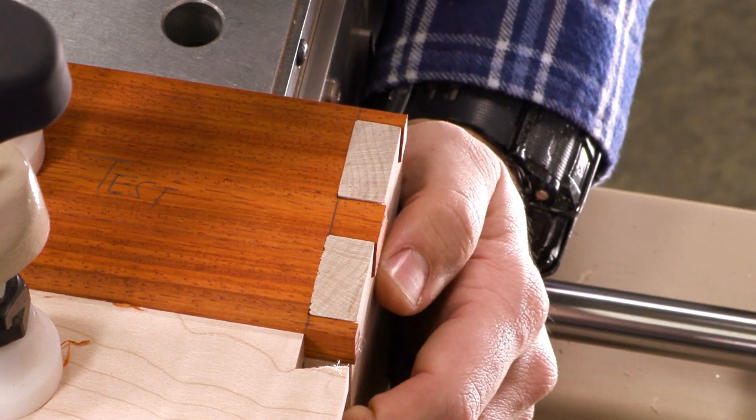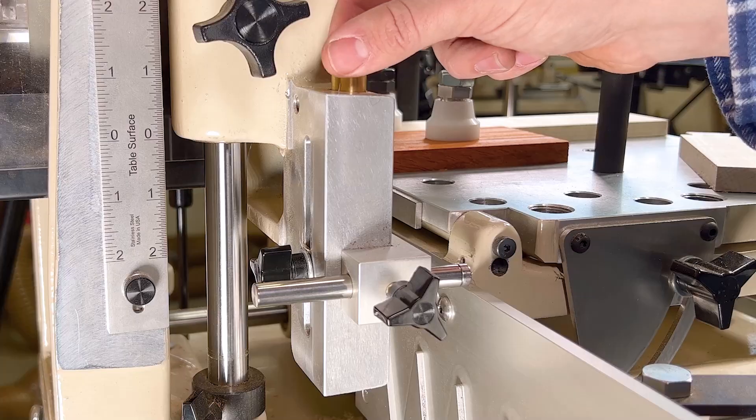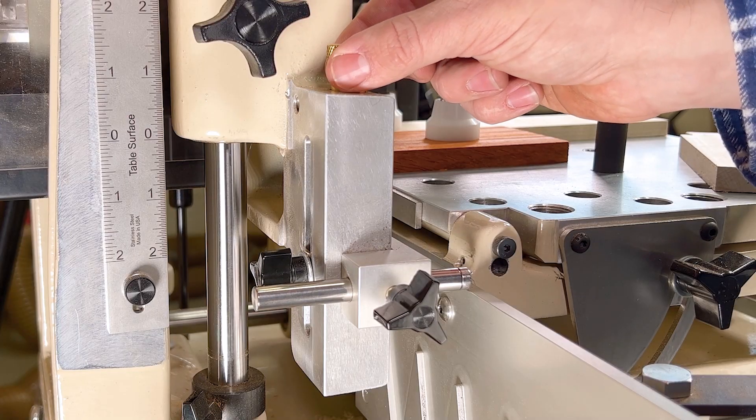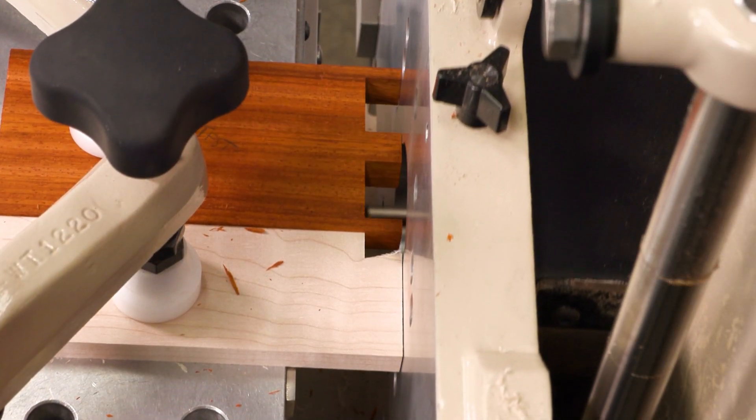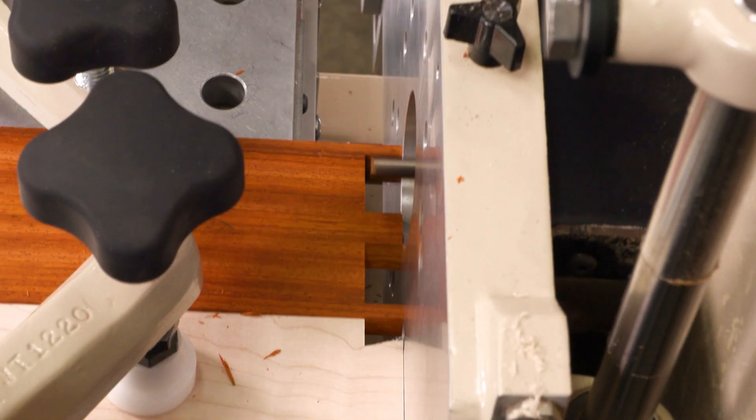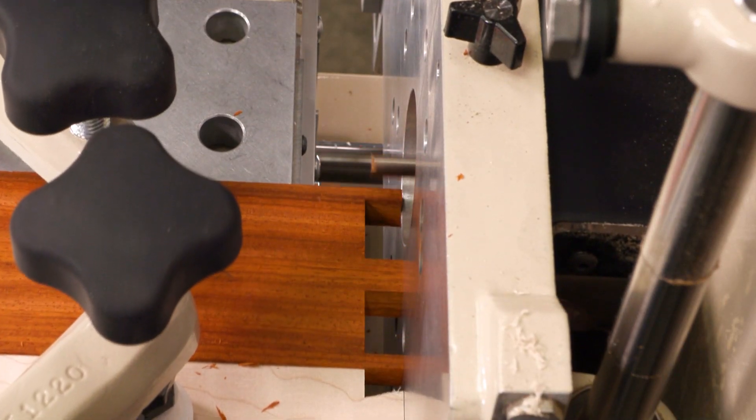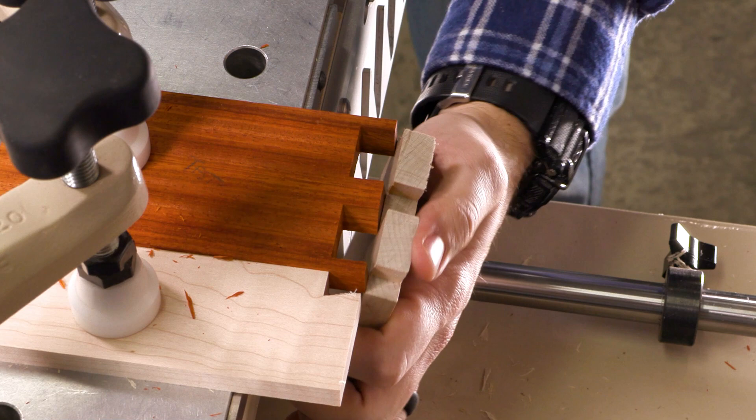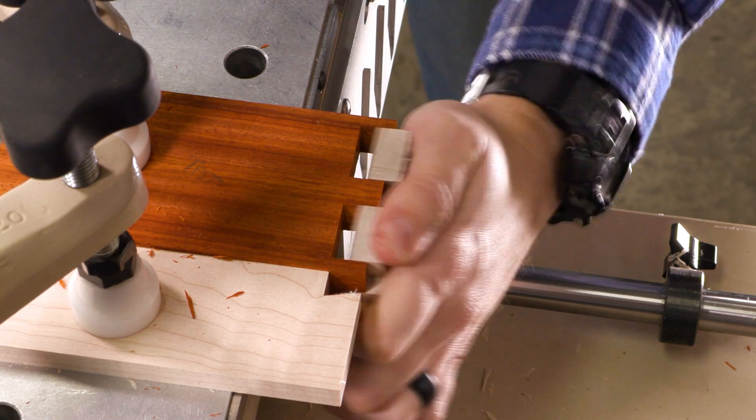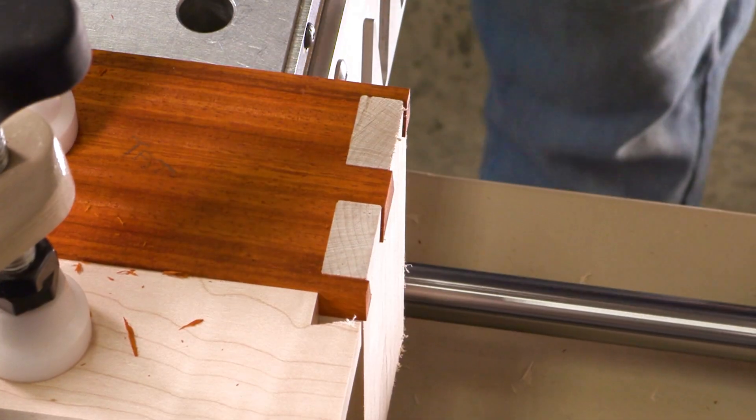If the fit is too loose, rotate the brass knob to the left to lower the position of the stylus pin. Cut the oversized pins off of your test workpiece and return it to its position for another test cut. Continue fine-tuning the position of the stylus pin until you achieve a tight-fitting dovetail.